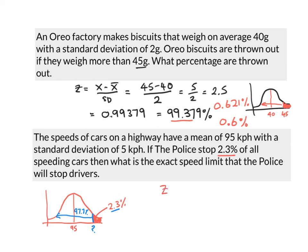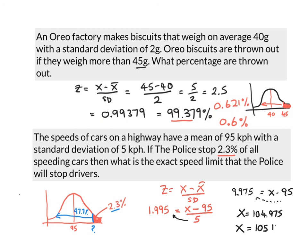So we know that Z equals X minus the mean over the standard deviation. And we know that 1.995 is our Z score. The data value is what we're trying to find. The mean is 95 and the standard deviation is 5. So we cross multiply and we get 5 times that, which is 9.975, equals X minus 95. So we take the 95 to the other side and we get 104.975, so we could probably round that up to 105 kilometers per hour is the speed. Above that, the police will stop you.